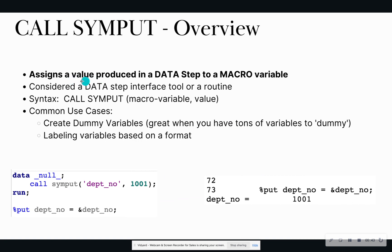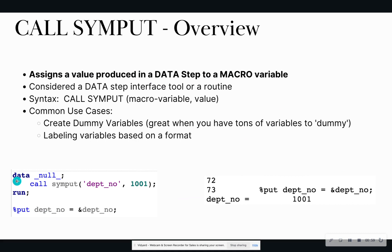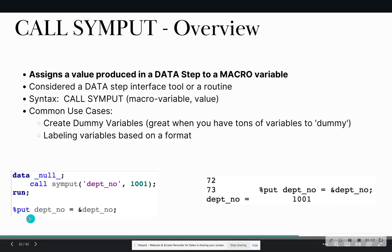This routine assigns a value that you create within a data step to a macro variable that you can call on later. Looking at this visual in the left-hand corner, I have a data step — data underscore null — and I'm calling the call-send-put routine to create a macro variable called department_no with the value of 1001. Once I run this data step, I'm able to write the value of that macro to my log using the percent-put macro. If you missed the percent-put macro, look at part three of the video.